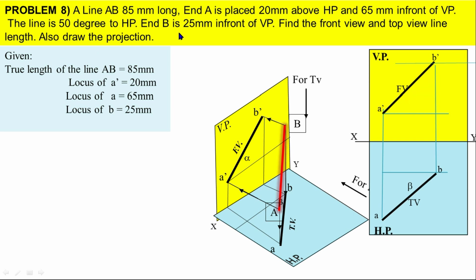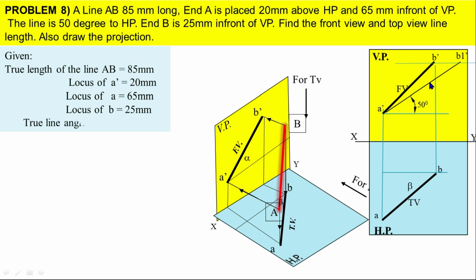The line is 50 degrees to the horizontal plane. Here they are relating the angle with respect to the plane, so definitely it will be a true line. The line is related with the horizontal plane, so definitely that is our angle theta - that is the front view true line. See the orthographic representation: the line A'B1' has an angle of 50 degrees.